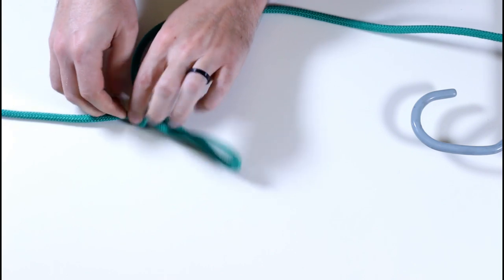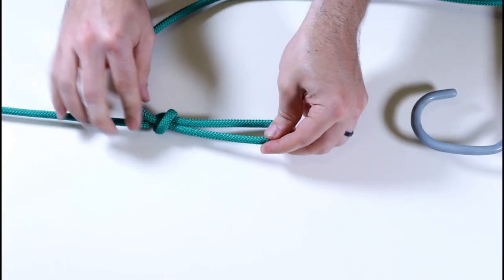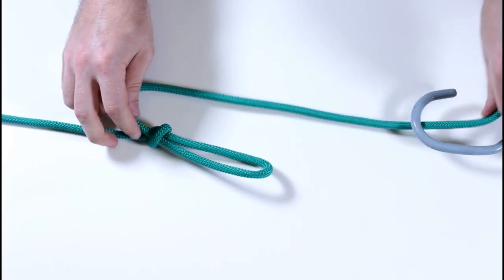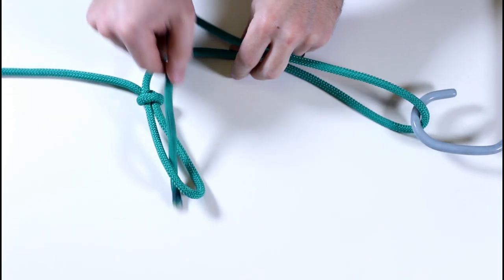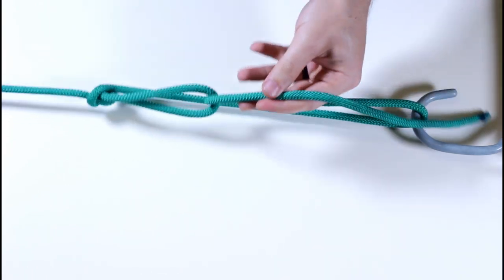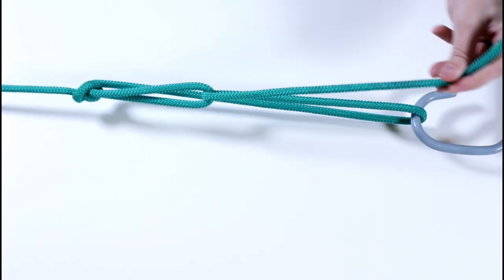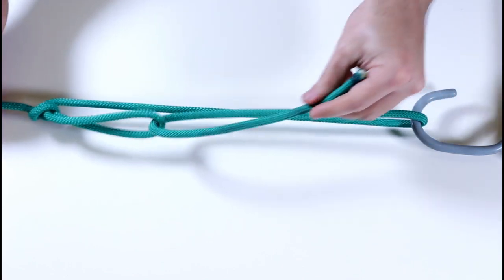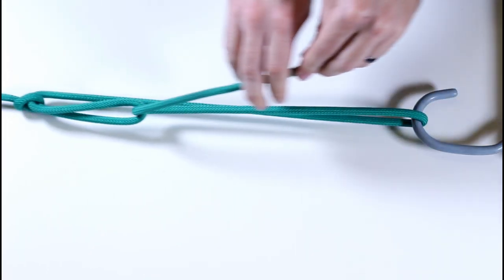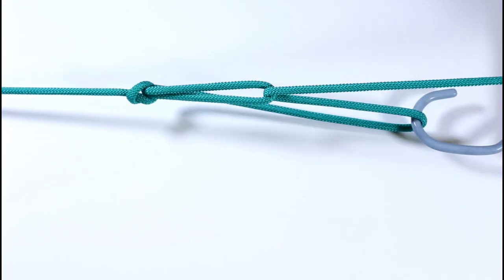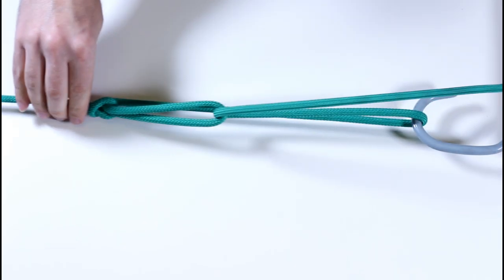Once the slipknot is secure, run the end of the rope through or around whatever you're tying to. Put it through that sliding loop, and start cranking on it. You can see that for every unit of length I pull through that loop, I'm tightening the load by about half that distance, so I'm doubling the force I'm applying. Physics.